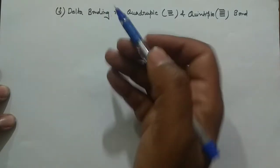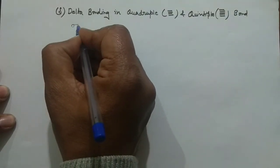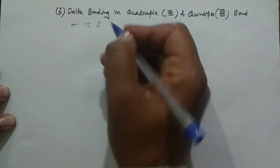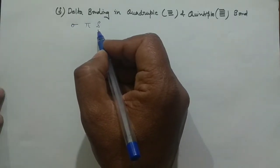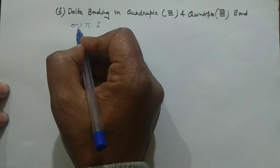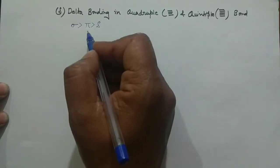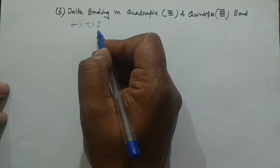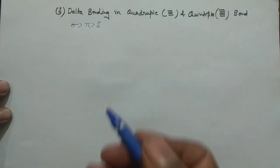You should know that we have the sigma bond, followed by the pi bond, and after pi bond you may have your delta bond. I'll restrict my explanation up to the delta bond and not include the phi bond today. If you check the bond strength, sigma bond is the strongest, followed by pi, and your delta bond is the weakest — it is weaker than your pi bond.